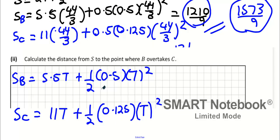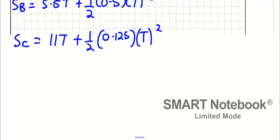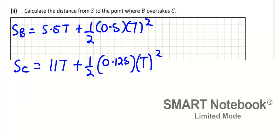And SC is 11T plus a half times 0.125 times T squared as well. Now a half times 0.5 is a quarter. We're going to put both these equations equal to each other and solve the quadratic and get the time and then get the distance. Part two is easier than part one. I'll put them equal to each other, so 5.5T plus a quarter T squared equals 11T plus one sixteenth T squared.